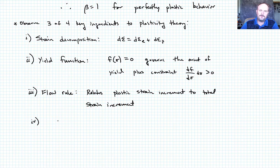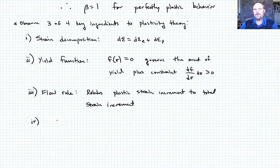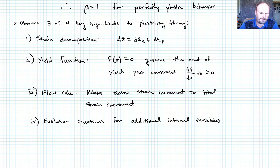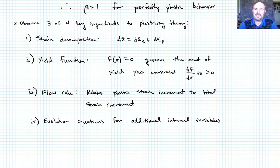The fourth key ingredient, not addressed here, is that the yield function and flow rule may also depend on other internal variables — such as dislocation density or hardening parameters — that describe how the yield surface evolves. Evolution equations would be needed for those variables. The next level of complexity is a material exhibiting isotropic hardening, which will be the focus of the next topic.